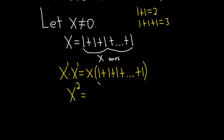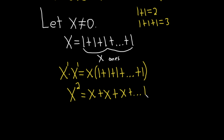Over here on the right-hand side, we're going to use the distributive property — basically multiplying x by each of these ones. So we'll get x times 1, which is x, plus x times 1, which is x, plus x times 1, which is x, plus dot dot dot, plus x times 1, which is x. No issues here, just simply using the distributive property.